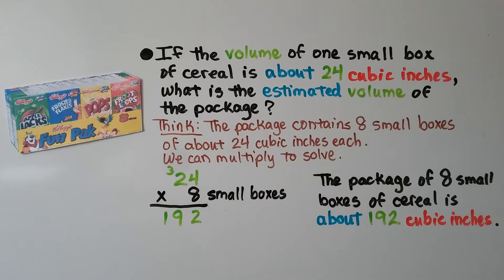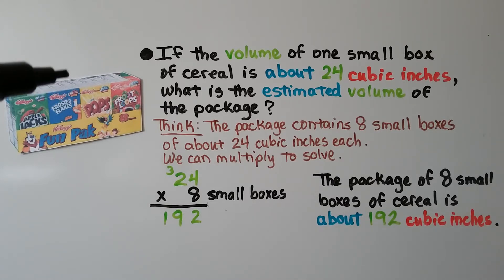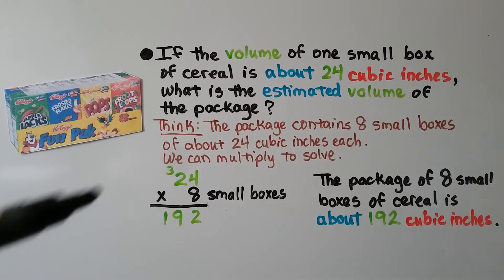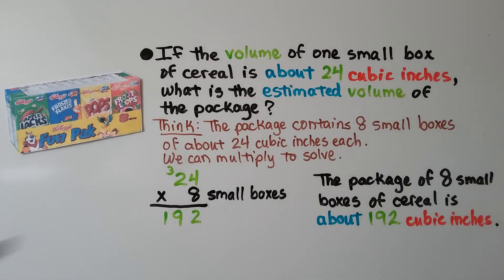If the volume of one small box of cereal is about 24 cubic inches, what is the estimated volume of the package? The package contains 8 small boxes of about 24 cubic inches each. We can multiply to solve: 24 times 8 is 192. So the package of 8 small boxes of cereal is about 192 cubic inches.